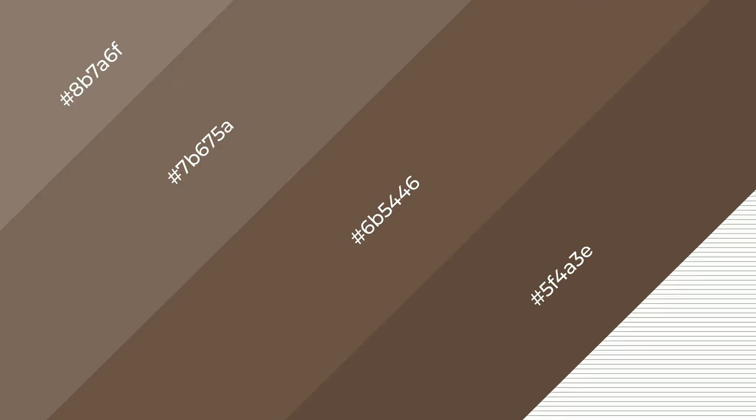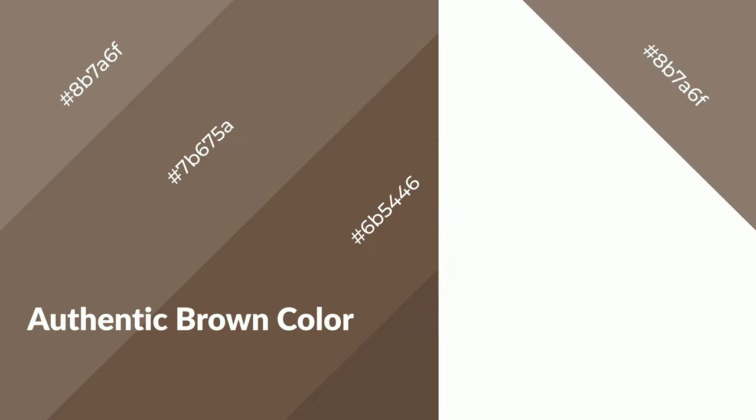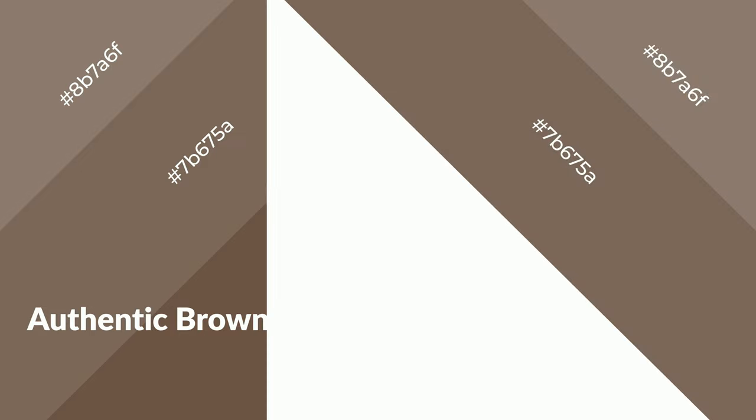To generate shades of a color, we add black to the color, and it is used in patterns, 3D effects, and layers. Shades create depth and drama. Authentic brown is a warm color and it emits cozier and active emotion.